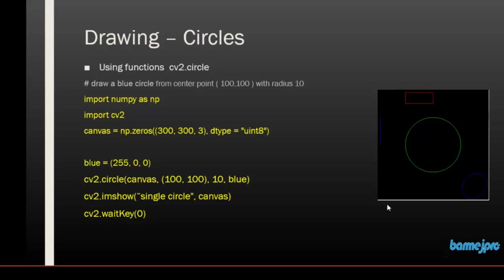Hello and welcome back. In the previous session we drew some rectangles using the OpenCV library, and in this session we will go ahead with circles. We will be drawing single circles, then groups of circles like concentric circles and random circles. Circles can be drawn using the function cv2.circle, just like cv2.line and cv2.rectangle. To draw a circle we require a center point, the radius, and an optional parameter like thickness.